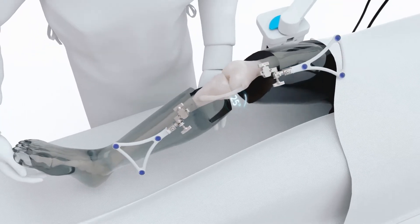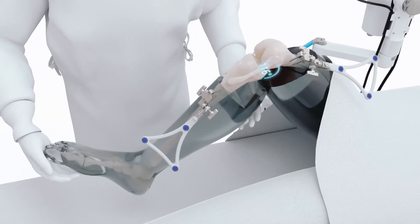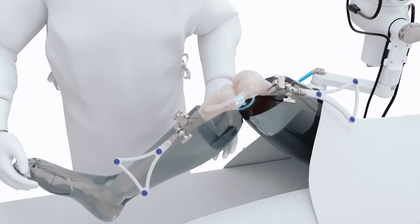Your surgeon will move your leg back and forth to test the function of your knee. This will help assess your full leg alignment and soft tissue tension.